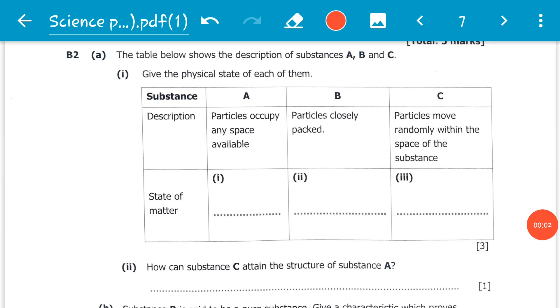Hello everyone, welcome to another exciting revision series of the November 2019 science paper 2. We have now reached the revision of question B2, and question B2a reads: the table below shows the description of substances A, B and C.